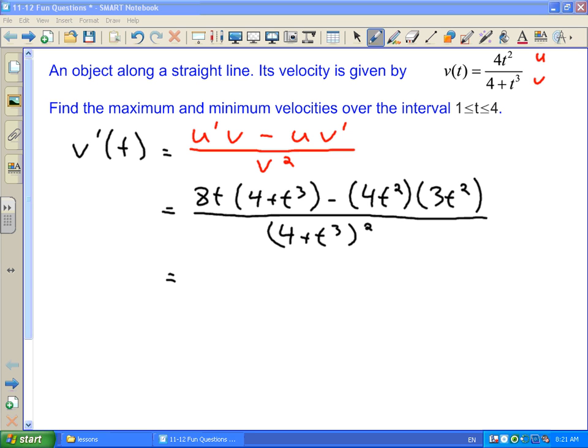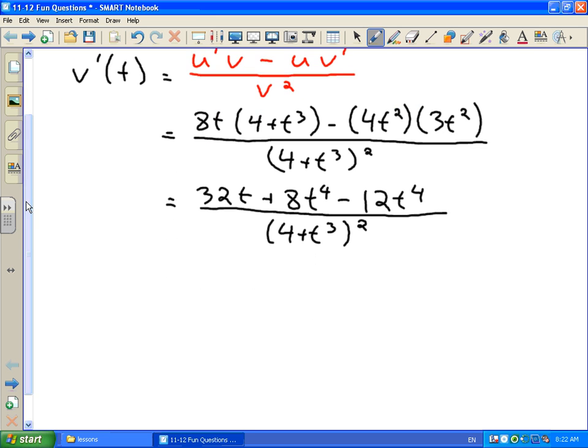Now we want to simplify this expression a little bit. Let's do some expansion here. We'll have 32t + 8t⁴, and then minus 12t⁴. This is all still divided by (4 + t³)². We're not going to worry about simplifying that denominator because eventually we're going to set this equal to 0, and only the numerator is going to interest us. Further simplifying our numerator, we end up with 32t - 4t⁴ all over (4 + t³)².